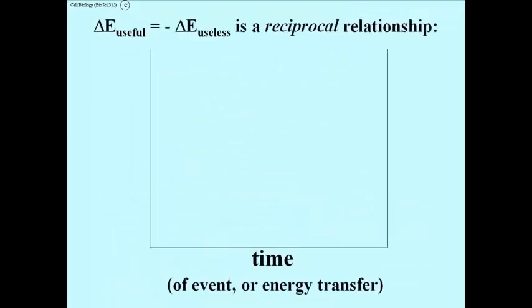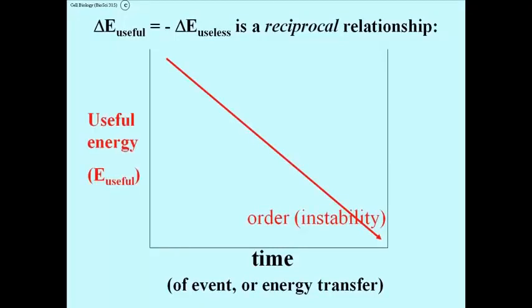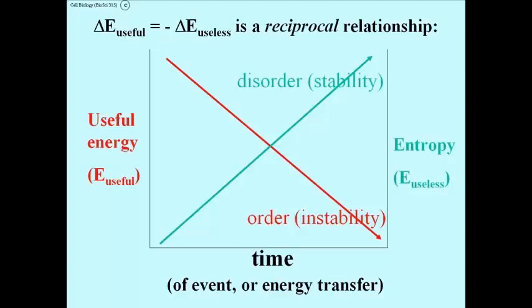Graphed this way, useful energy is always declining and useless energy is always increasing reciprocally. I've introduced two terms here, stability and instability, which I haven't spoken of yet.